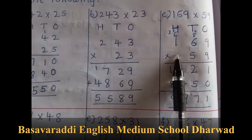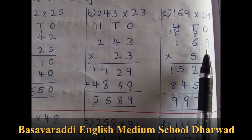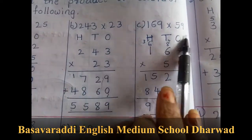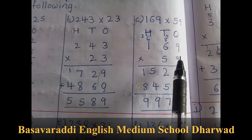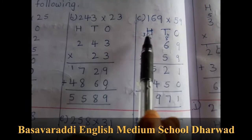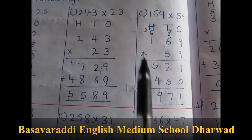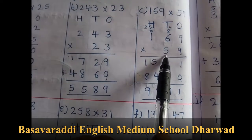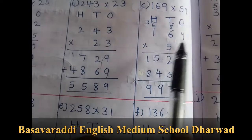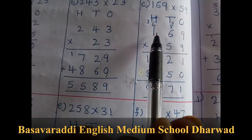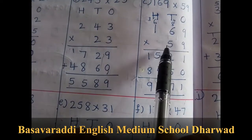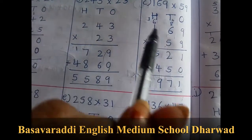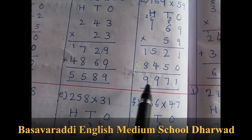Now C1: 169 into 59. So 9 times 9 is 81. 9 times 6 is 54 plus 8 is 62, 6 is carry over. 9 times 1 is 9, plus 6 is 15. Putting 0 for ones place. Moving to tens: 5 times 9 is 45, 5 is carry over. 5 times 6 is 30, plus 4 is 34, 3 is carry over. 5 times 1 is 5, plus 3 is 8. So the answer is 9971.